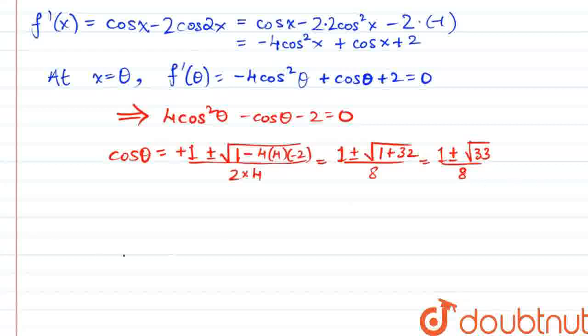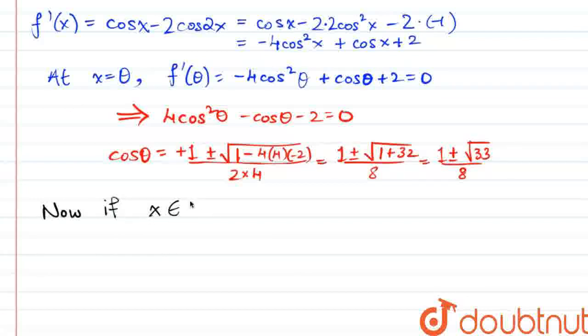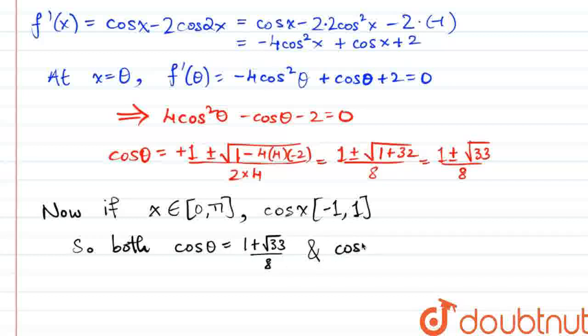Now, if we take the limits that we are given in the interval, that is, if x belongs to 0 comma pi closed, then cos x in general will belong to negative 1 to 1, the entire range of cos x. So, both the values, cos theta is equal to 1 plus root 33 by 8 and cos theta is equal to 1 minus root 33 by 8 are valid.